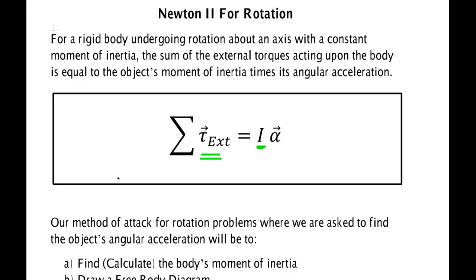From our big board, we'll remind you that if you had constant mass, in linear land the sum of the external forces was equal to the mass times acceleration — that was Newton's second law. In rotation, we've replaced the forces with the sum of the external torques on the object, the mass has been replaced by the rotational analog moment of inertia, and the acceleration with the angular acceleration.